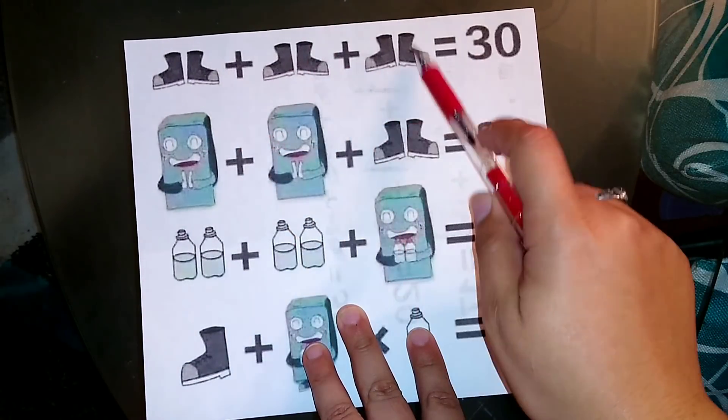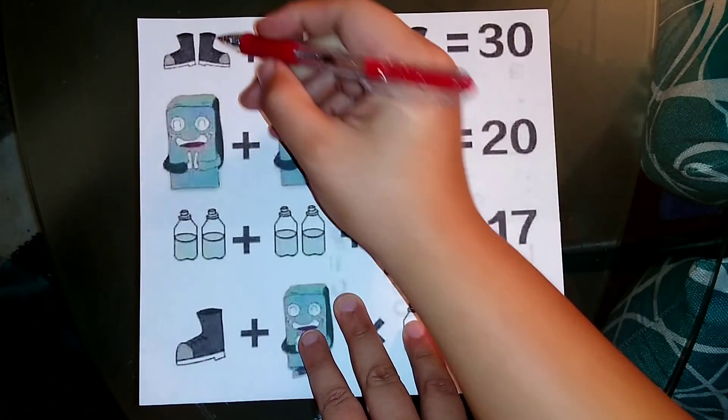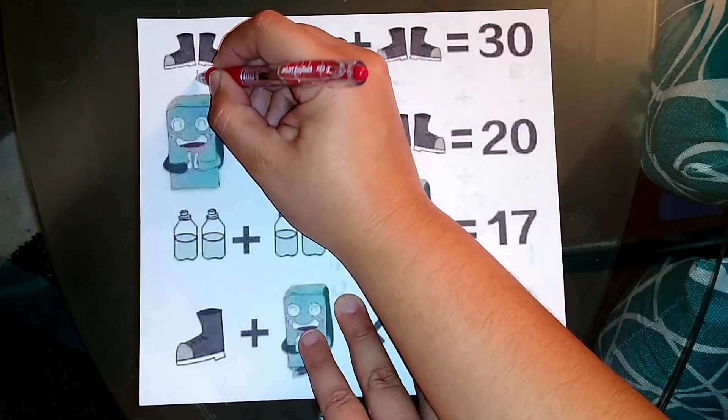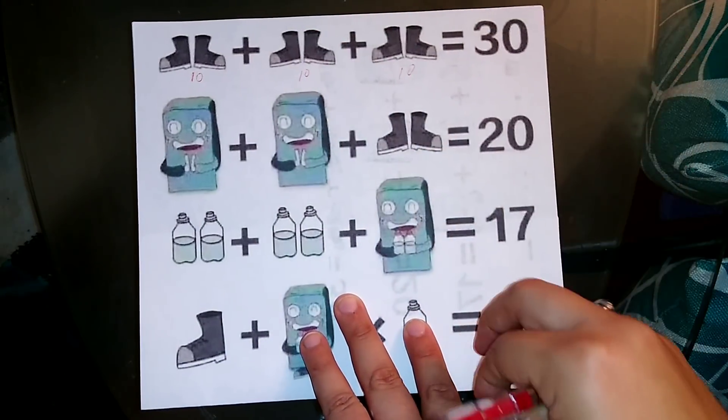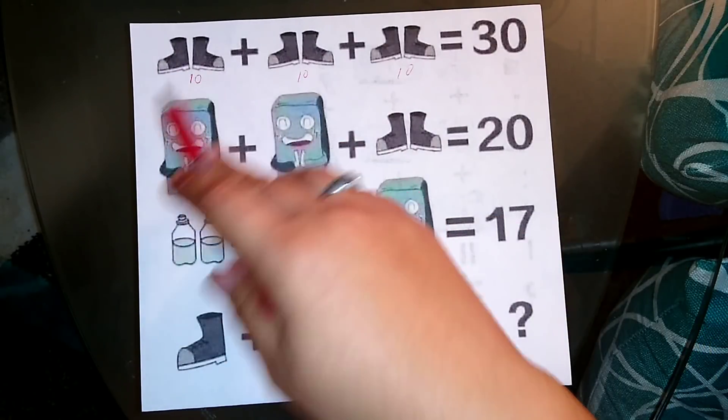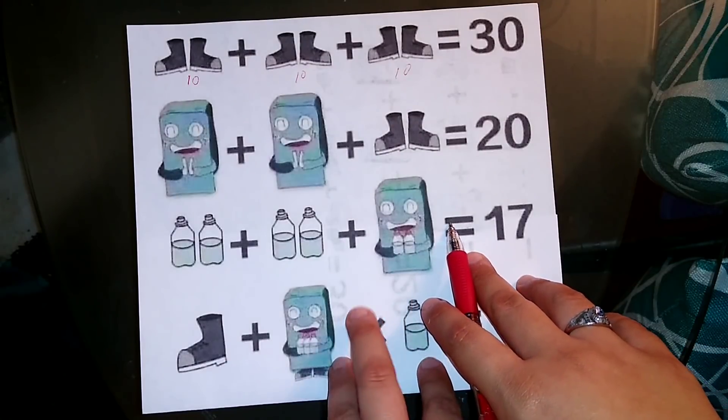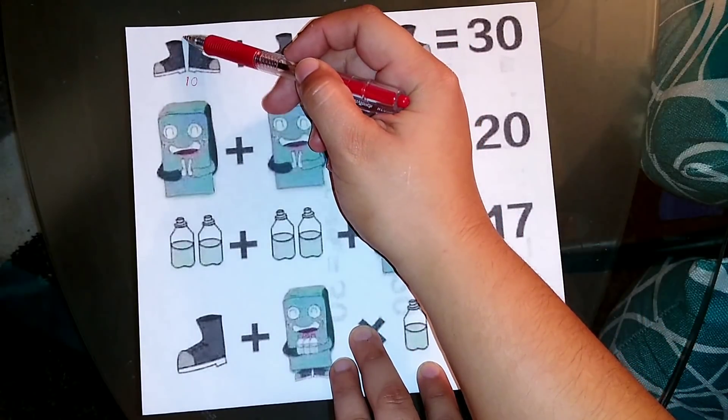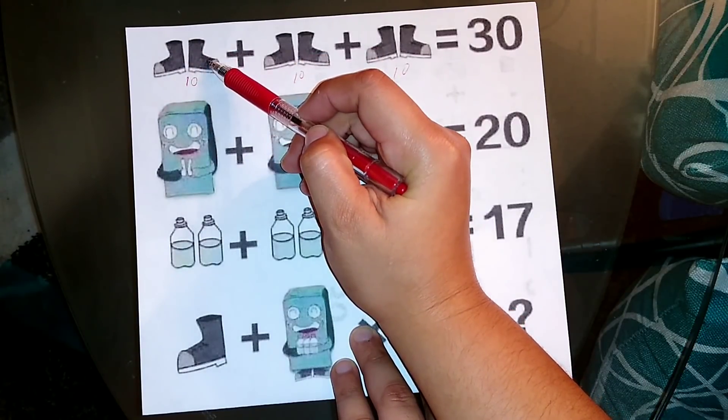What plus what plus what will equal 30? Well, if we do 10 plus 10 plus 10, that will give us 30. That means that both pairs of shoes are 10, and half of that would mean that this is 5 and this is 5.